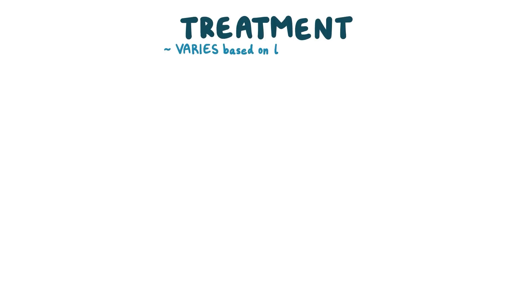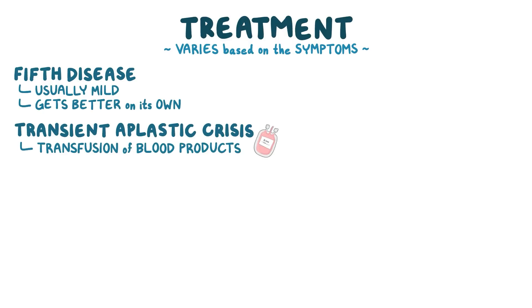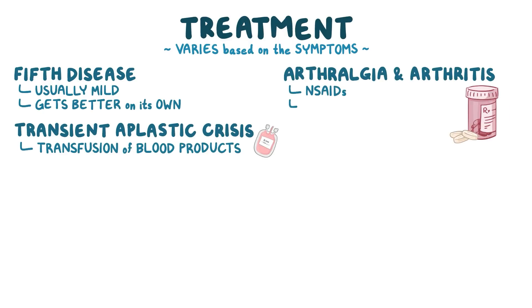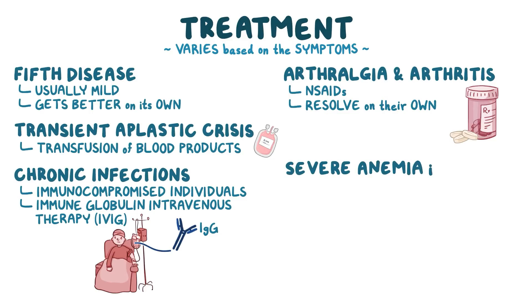When it comes to treatment for parvovirus B19 infection, it varies based on the symptoms. Fifth disease is usually mild and gets better on its own, while a transient aplastic crisis often requires transfusion of blood products. Arthralgia and arthritis are treated with NSAIDs and usually resolve on their own. Chronic infections in immunocompromised individuals are treated with immune globulin intravenous therapy, or IVIG, which involves giving antibodies — mostly immunoglobulin G — taken from donor blood plasma.